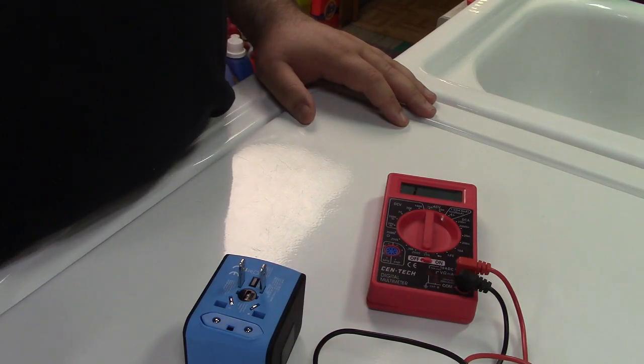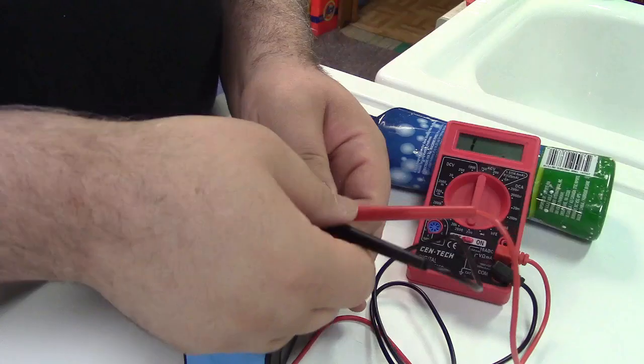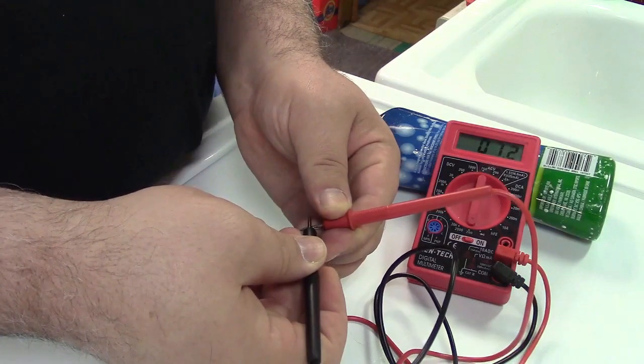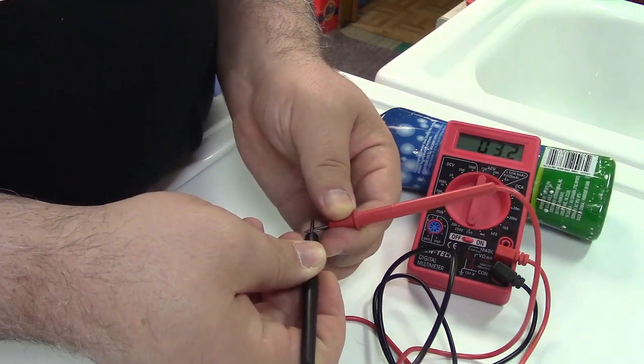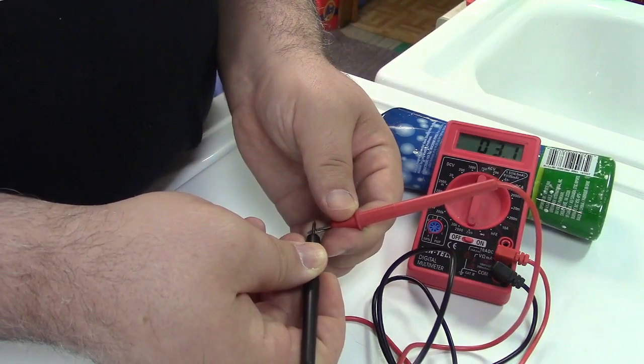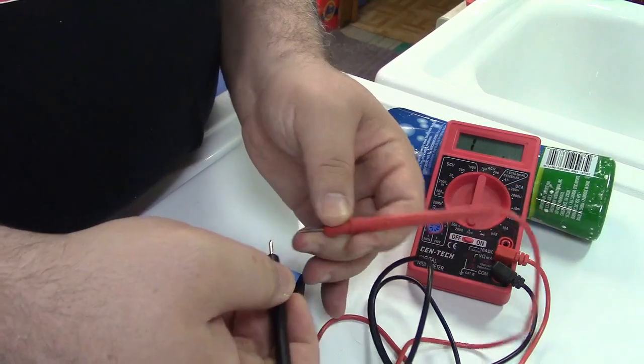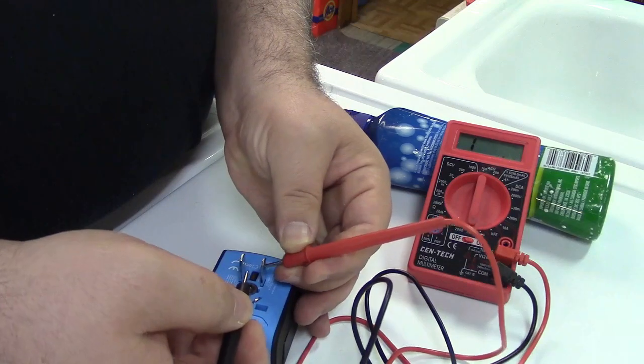Alright, so I have the meter on continuity. If I touch them together, well, today we're reading 3.1 ohms, so close enough for government work. We will attach the probe to one side and I will probe everything else here.